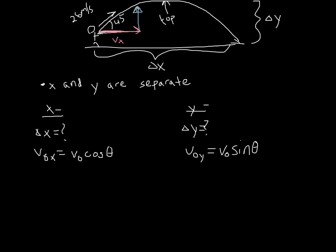Computing the values: v0x = 26 × cos(45°) = 18.4 meters per second. Plugging in for the y-direction the same way, v0y = 26 × sin(45°) = 18.4 meters per second as well.